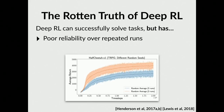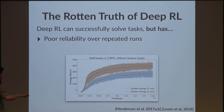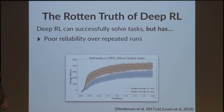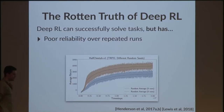One reason is super poor reliability over repeated runs. This is the same game with the same algorithm: the x-axis is time steps, the y-axis is the return at each step. The only difference between two clusters of curves is the choice of five random seeds — they look like totally different algorithms even though it's the exact same algorithm. We clearly have pretty bad reliability over repeated runs.